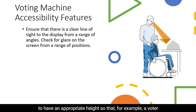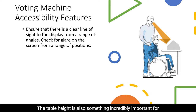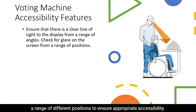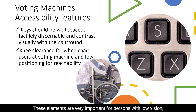Voting machines and tables for voters with disabilities need to have an appropriate height so that, for example, a voter who uses a wheelchair has easy access. The image here illustrates a clear line of sight for a voting machine for a wheelchair user. Table height is also incredibly important for accessibility. We might also need to think about glare on a screen from a range of different positions. This image shows a well-designed keyboard where the keys are spaced nicely apart, have tactile elements, and the color is contrasted with the background — very important for persons with low vision.